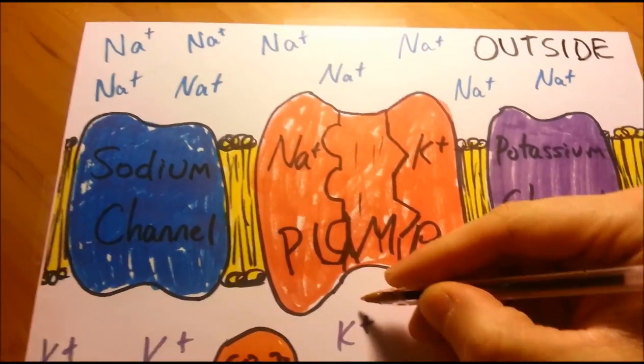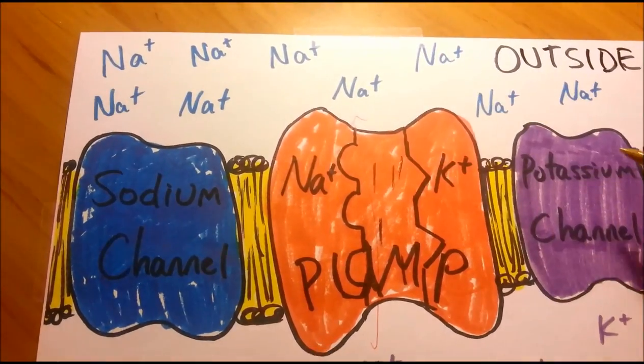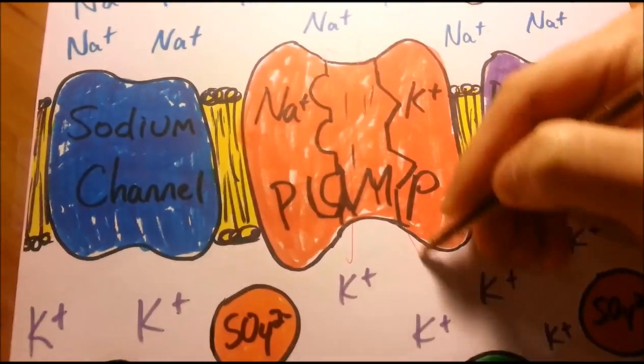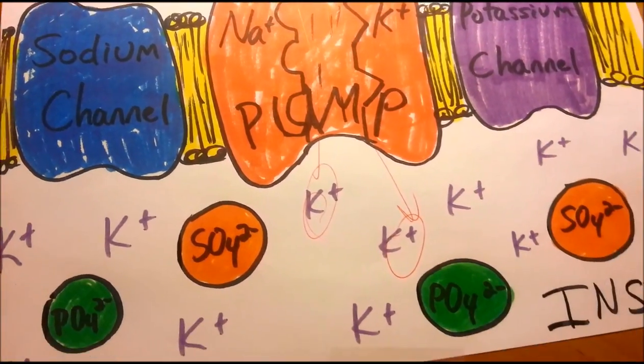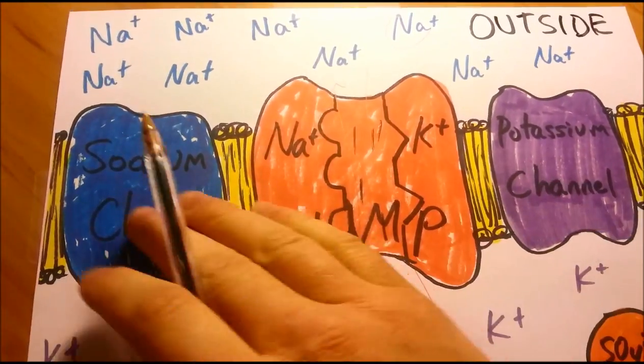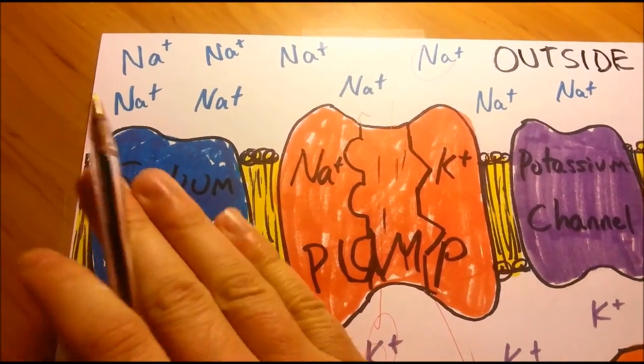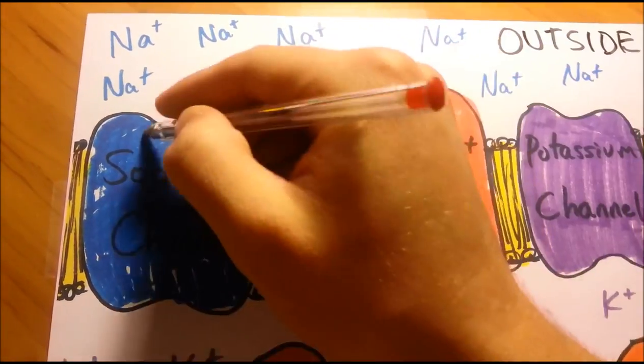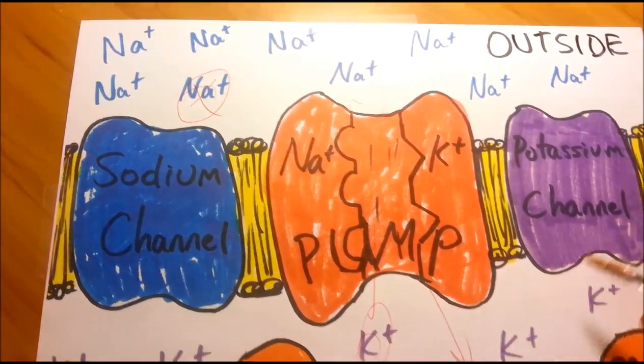The sodium potassium pump is going to pump out three sodiums, so one, two, three sodiums for every two potassiums, so one, two potassiums that come in. And the sodium channel here is usually in this constant state of being locked, so it's not going to allow any of these sodium to pump in, so that is not going to happen.